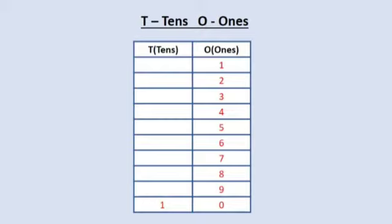So what is the place value of 1? It's 1 ones. What is the place value of 2? 2 ones. Place value of 3? 3 ones. Place value of 4? 4 ones — because 4 is sitting under the ones place. Same for 5, 6, 7, 8, 9 — they are all under the ones place. So their place values are 9 ones, 8 ones, 7 ones, 6 ones.